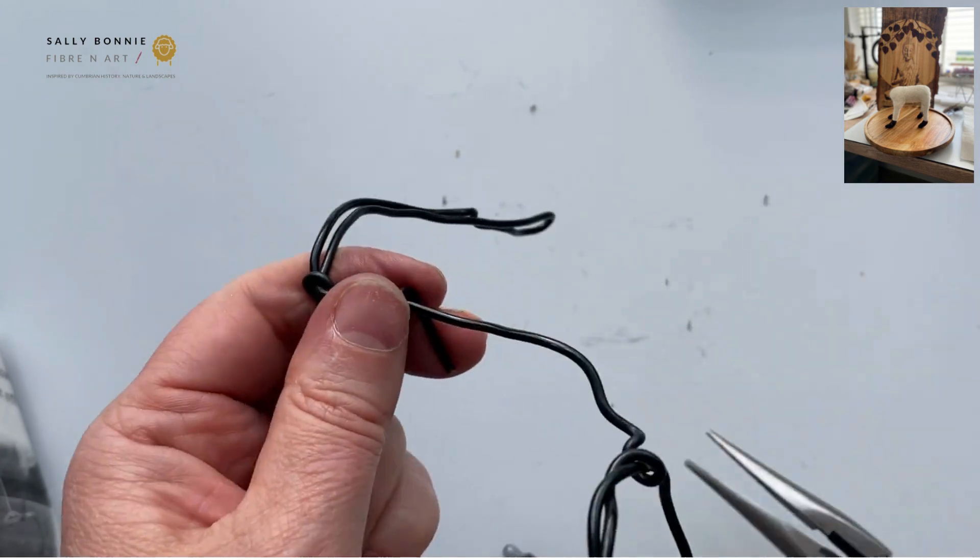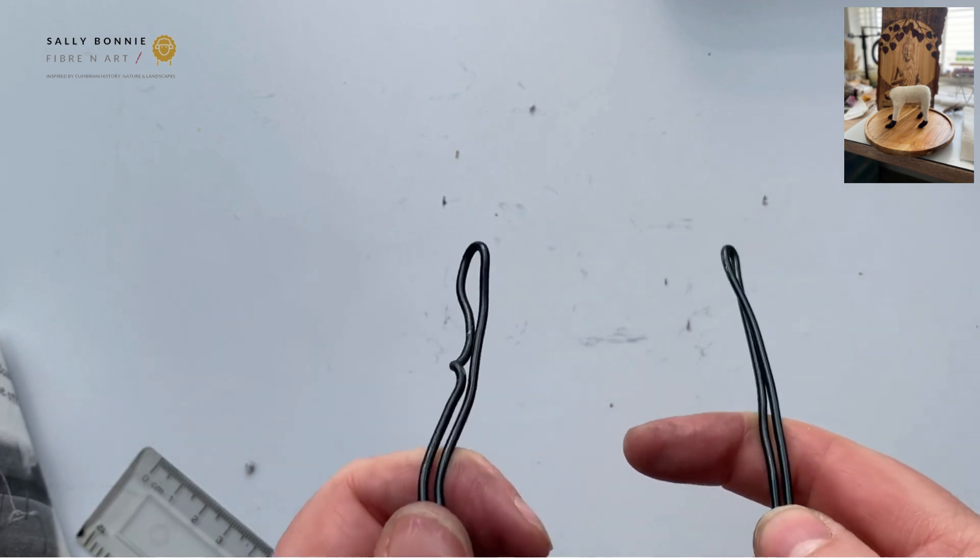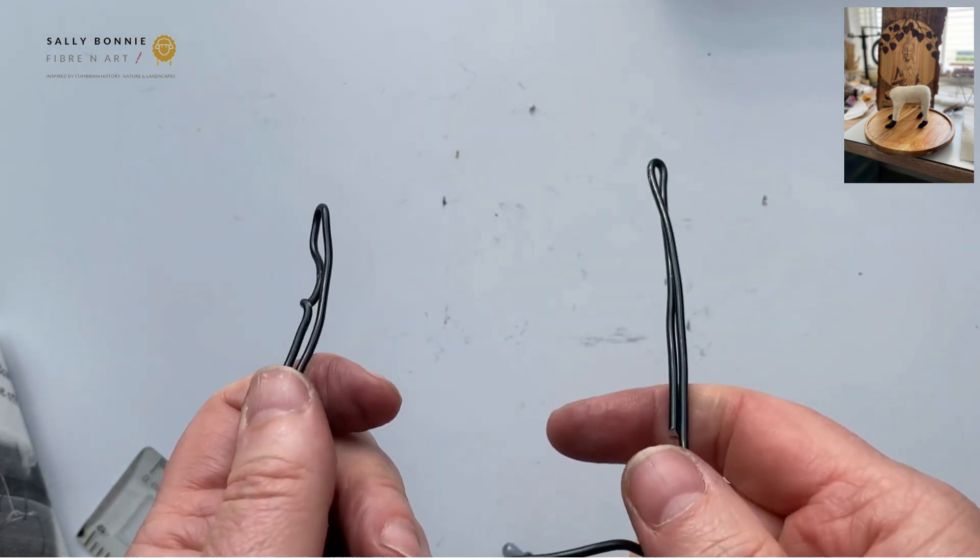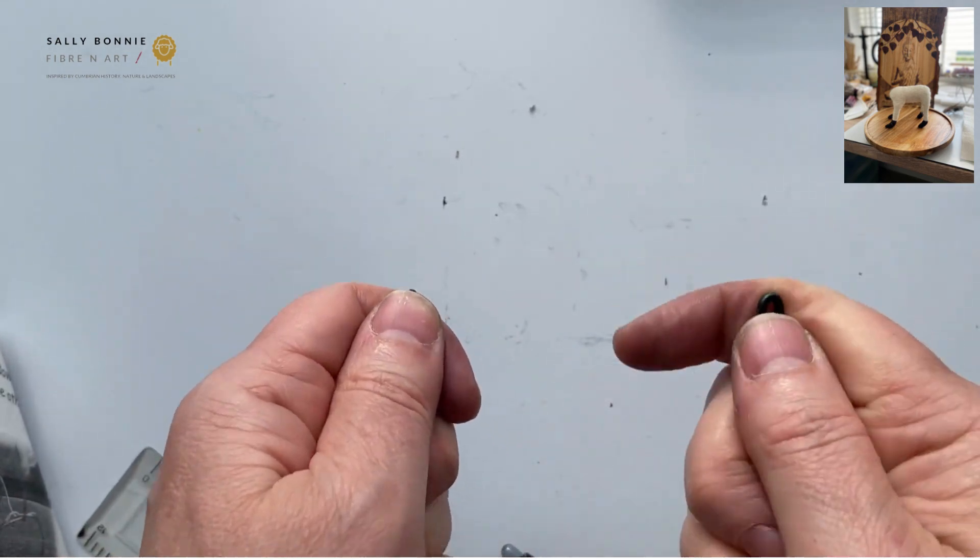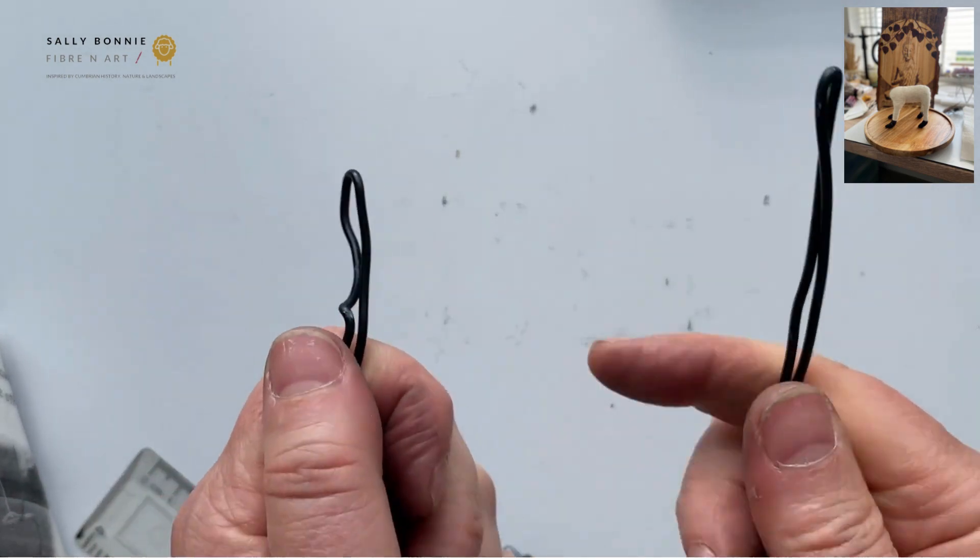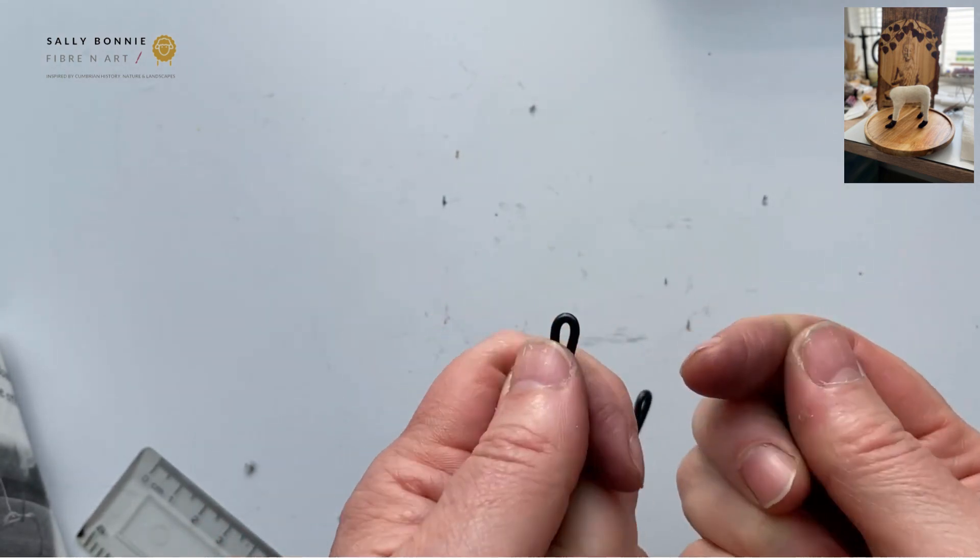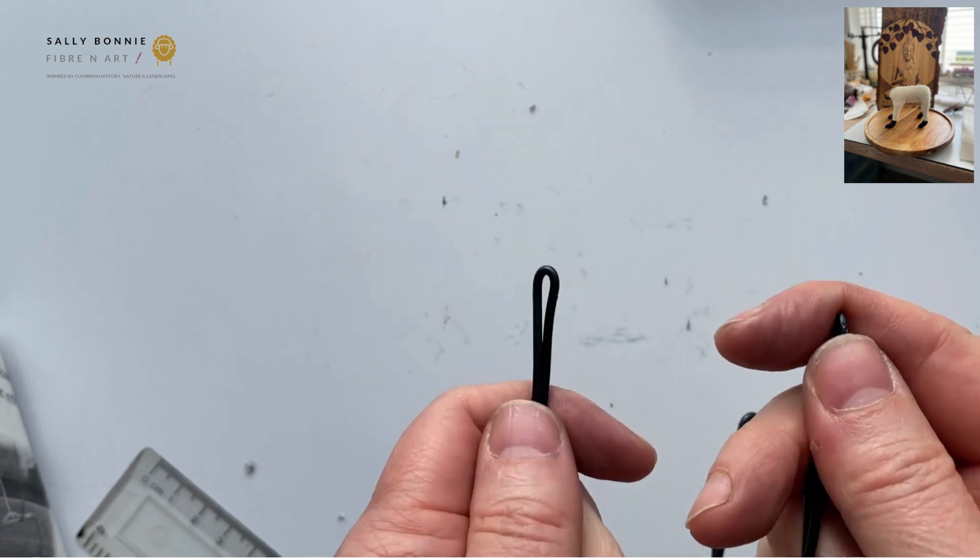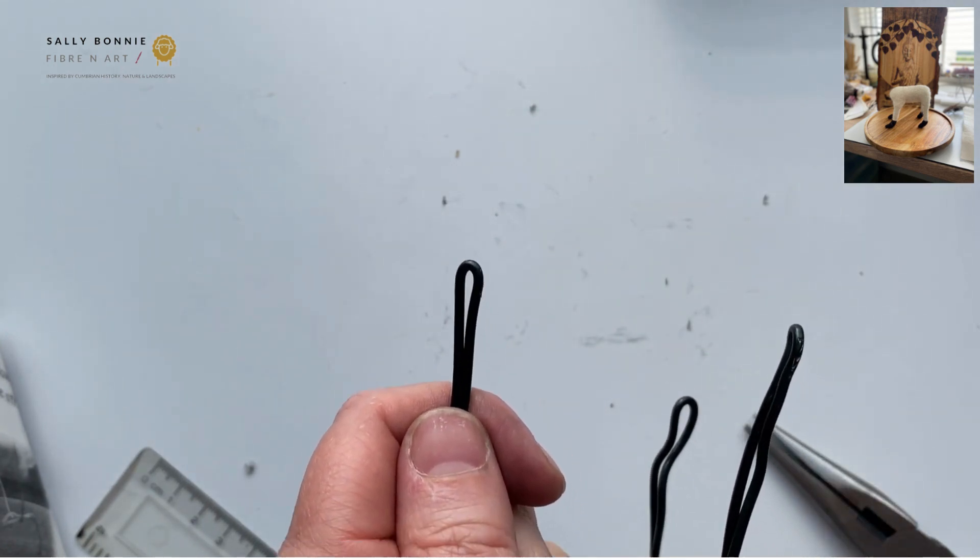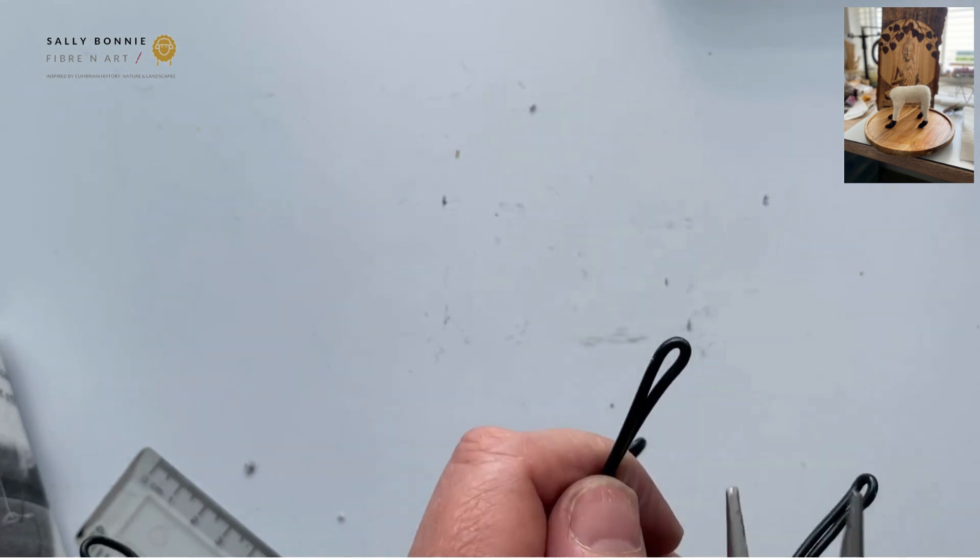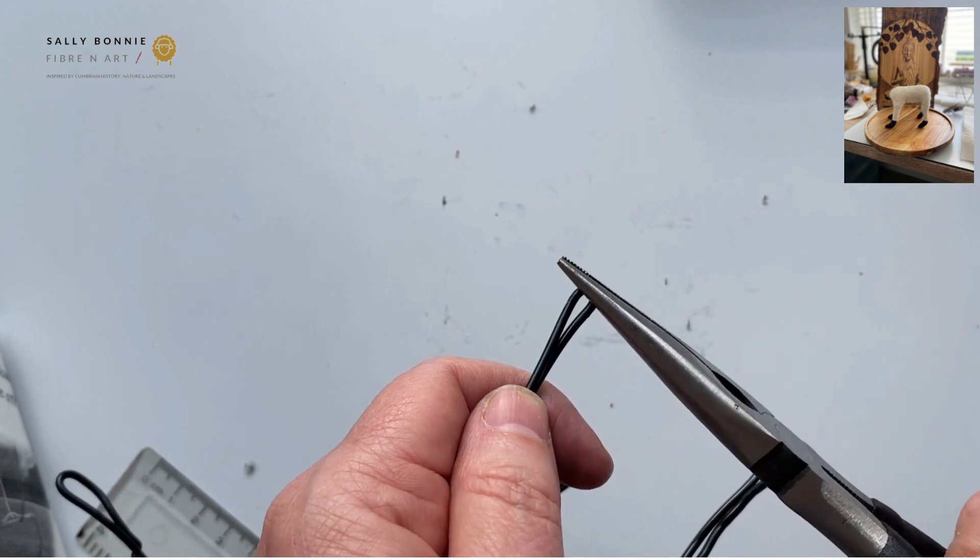And then what I want you to do is just go back and have a look at your measurements. So you want your legs to all be the same, otherwise you're going to have a wonky sheep. Now, if for any reason, say this one was longer than this one, make sure you get your arches, you know, reshape it and get your arches.